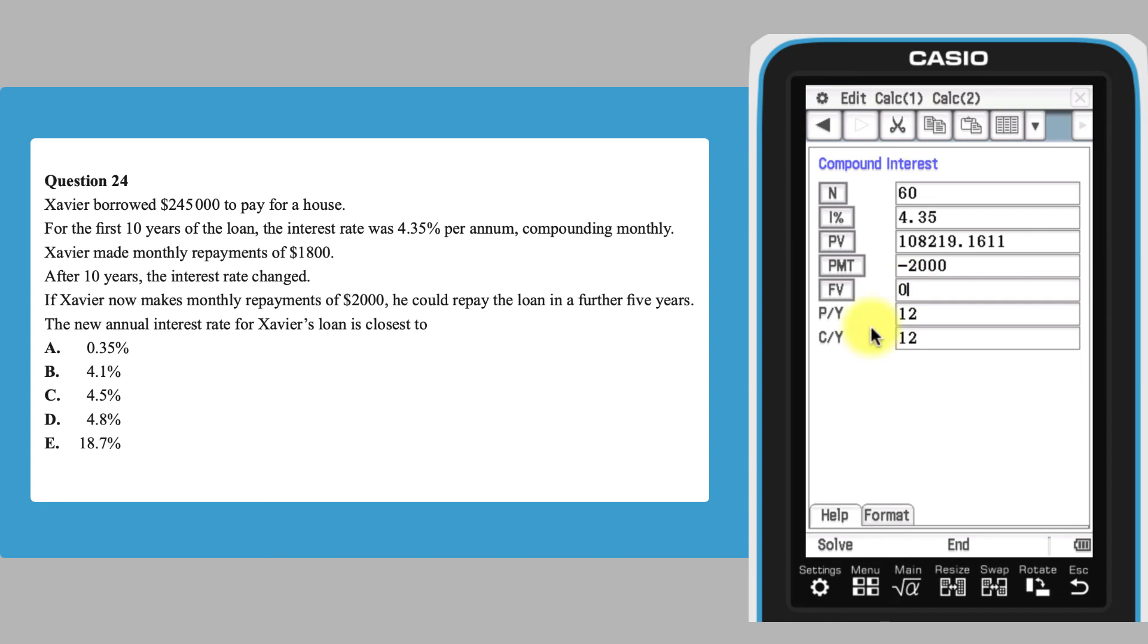Now tap on the interest icon. This shows us that the interest rate for the last 5 years must be about 4.1%, which is answer B.